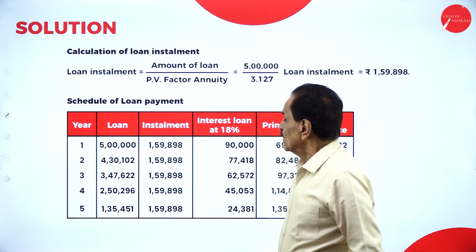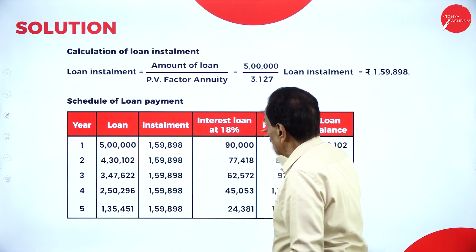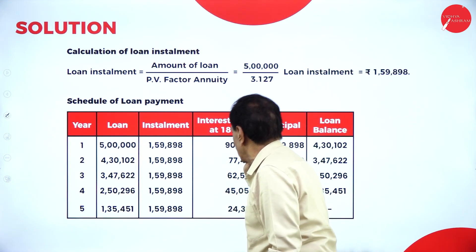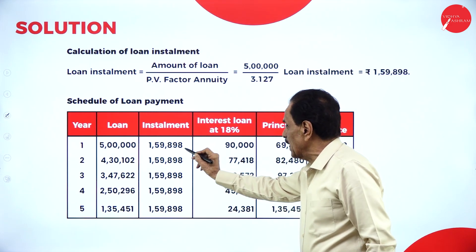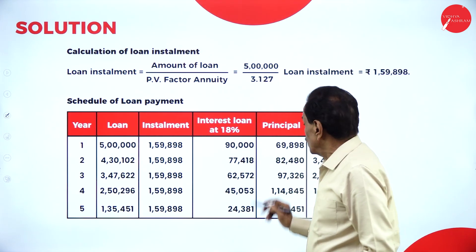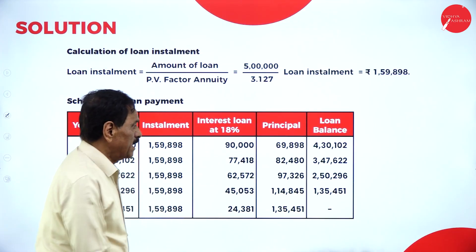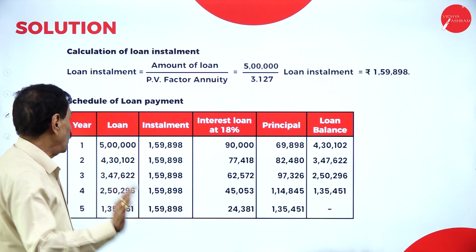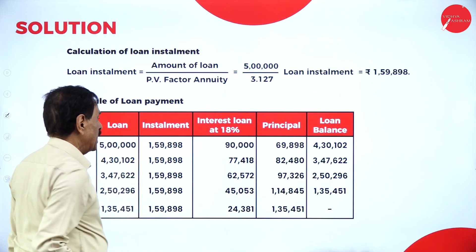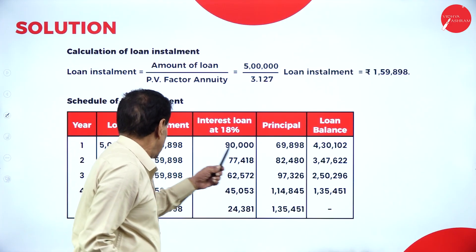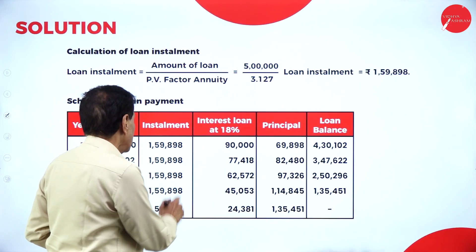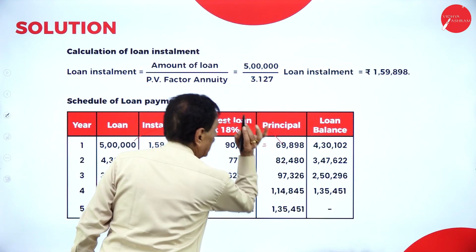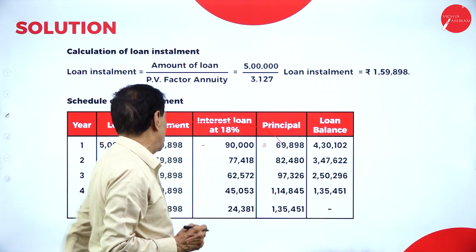Schedule of loan payment. The loan amount is 5,00,000 and the installment is 1,59,898. Interest at 18% on 5,00,000 is 90,000. If we deduct 90,000 from 1,59,898, the principal repayment is 69,898. The balance loan outstanding becomes 4,30,102.